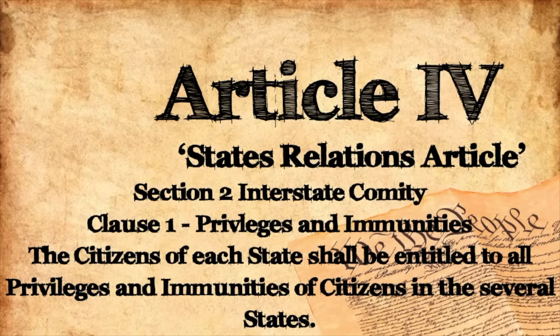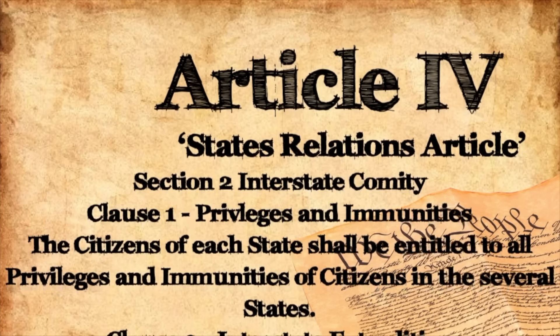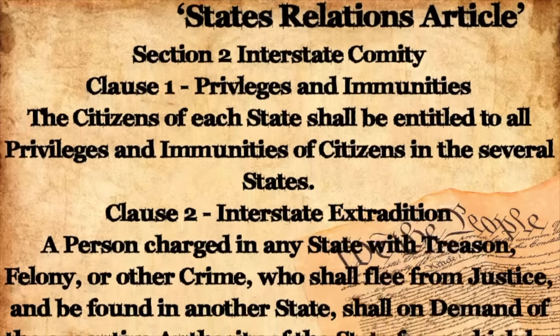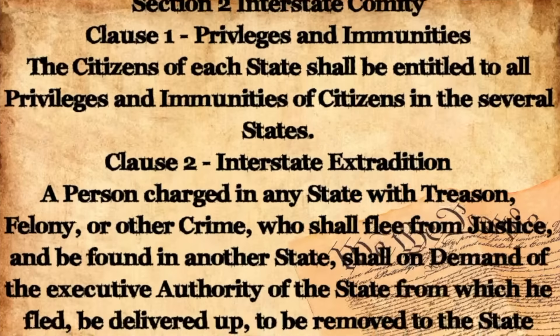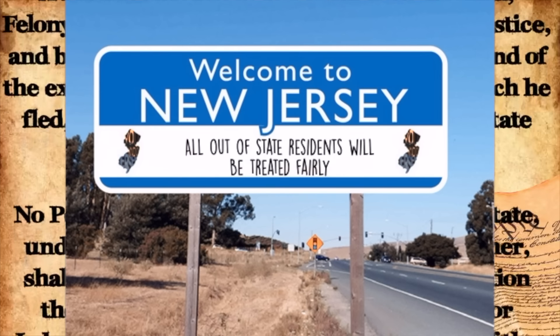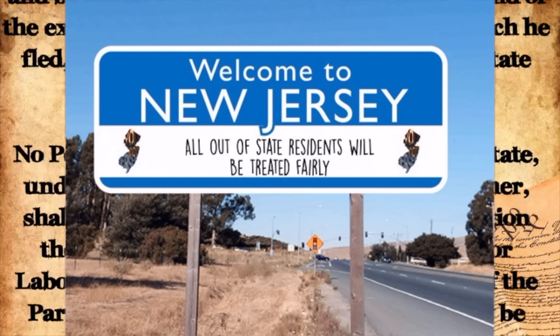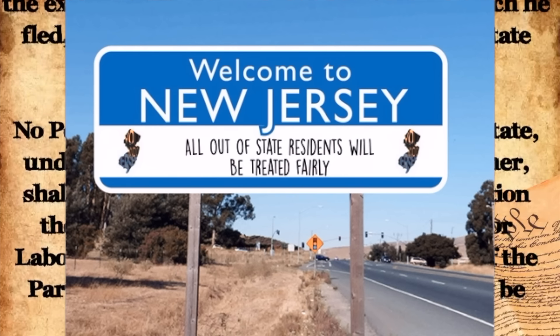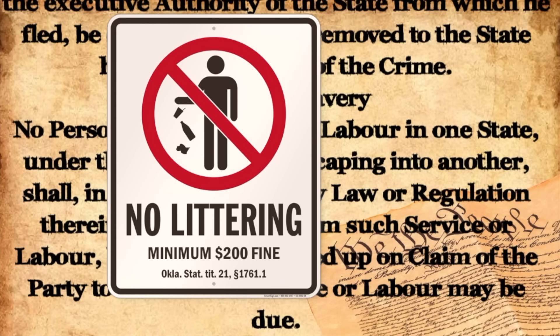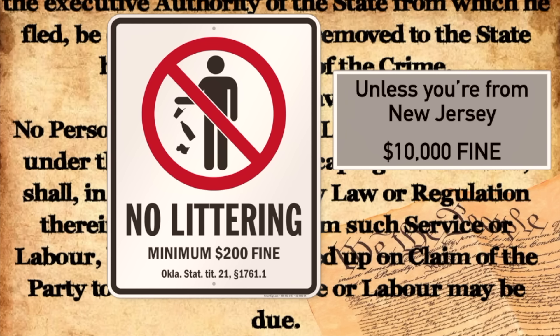Section 2 deals with privileges and immunities. This section ensures that citizens of each state are entitled to the same privileges and immunities as citizens of other states. It means, for example, that a person moving from one state to another should be treated fairly and equally. A state couldn't make or enforce a law that treats someone from another state in an unfair way — Article 4, Section 2 would make that law unconstitutional.